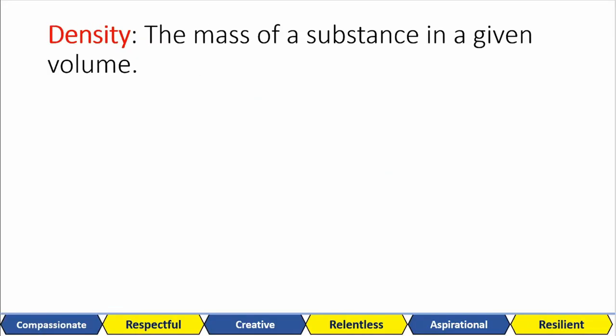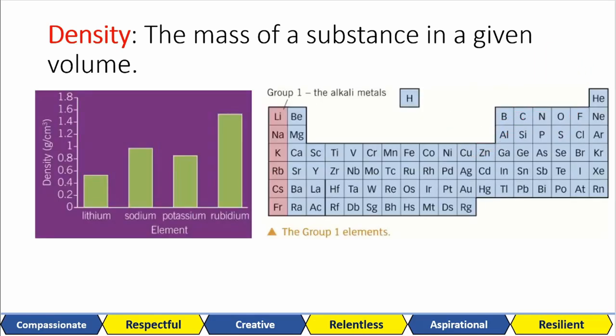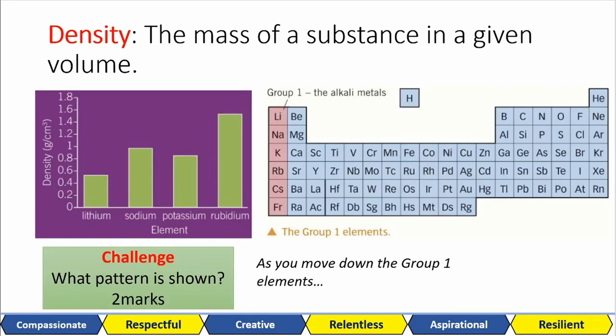Let's first look at some physical properties. Density is the amount of mass you have in a given volume. Check my video on the density required practical for more detail on that. Here I have a bar chart showing the densities of the different elements in Group One and a simplified periodic table to remind you of the order. Use these two to describe the pattern that is shown here. This is two marks. Use the sentence starter here if you're stuck.